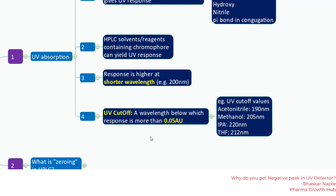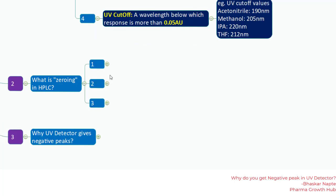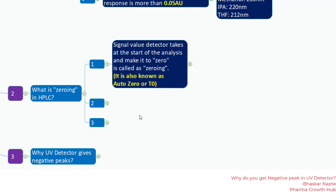I am building background to understand where absorptivity comes from. The second important point in understanding the negative peak phenomenon is called zeroing. In UV spectrophotometry, the analyst performs an auto-zero — you put in the diluent and set whatever absorbance value appears on screen to zero. The same principle applies in HPLC analysis. Zeroing is when the signal value detected at the start of the analysis is taken and set to zero; it is also called auto-zero or D0.